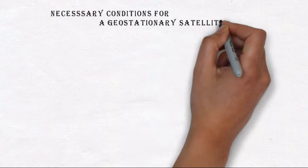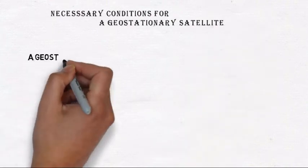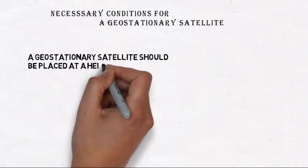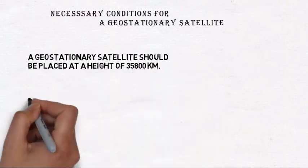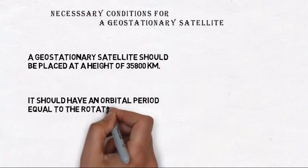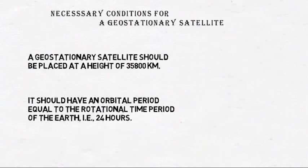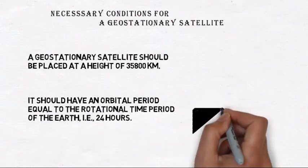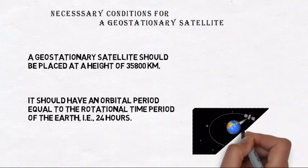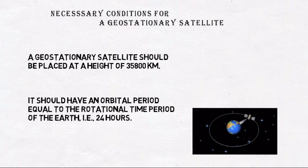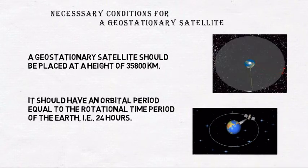Necessary conditions for a geostationary satellite: A geostationary satellite should be placed at a height of 35,800 km. It should have an orbital period equal to the rotational time period of the earth, that is 24 hours.